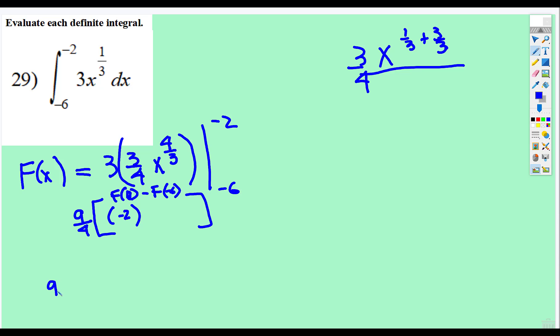So then it's 9 fourths, the only problem is don't forget to multiply the answer. So it's, what do we get, x to the 4 thirds. So it's negative 2 to the 4 thirds subtract negative 6 to the 4 thirds. All right, and then again, if you put in your calculator just like that, but I'm just going to do that in my head.